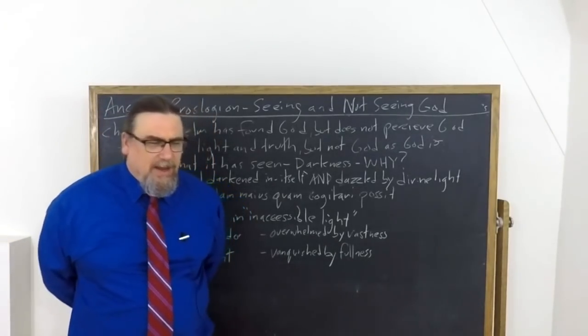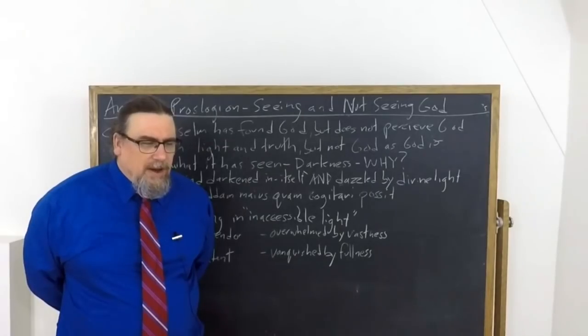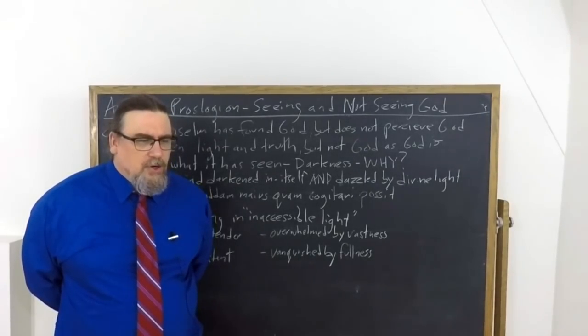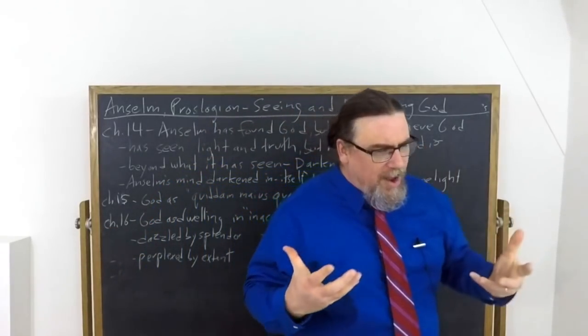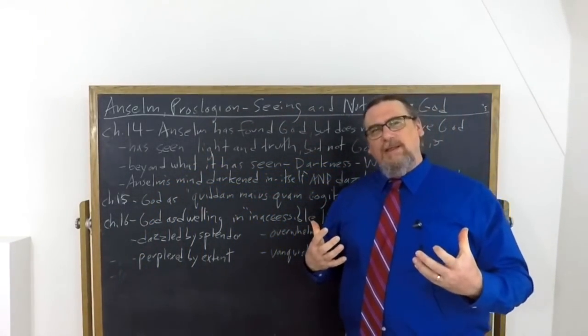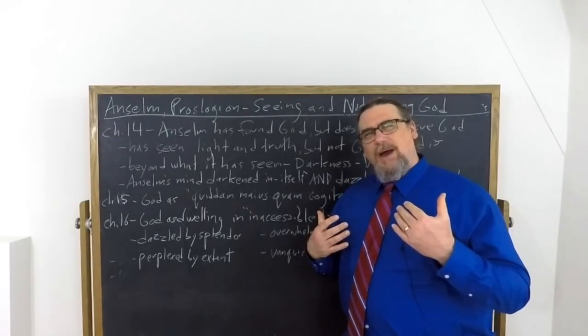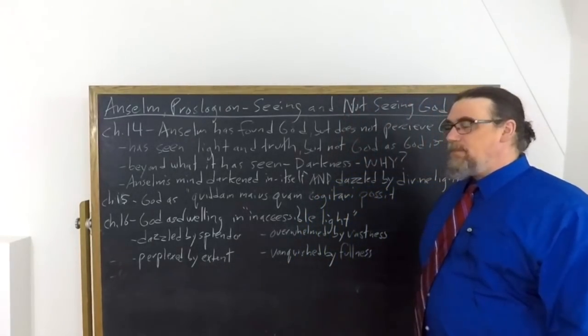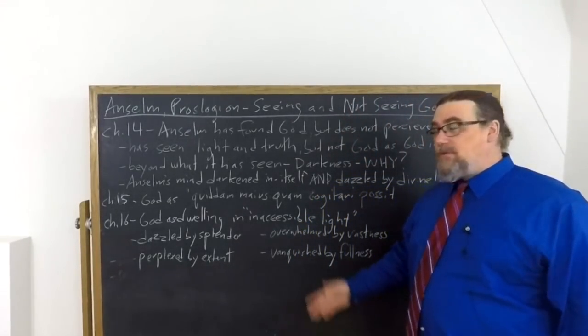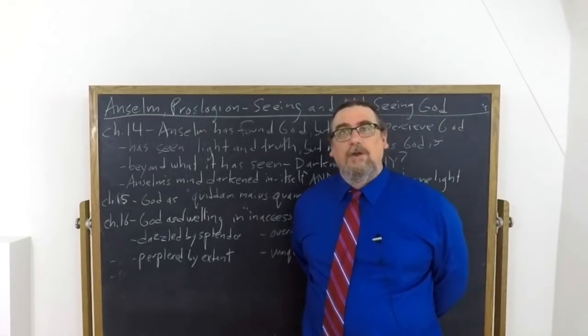So it's not simply visual, it's also quantitative in a certain sense, or perhaps we could talk about degrees of being. It is pinched by its own narrowness and vanquished by your fullness. So he says, how great is that light, for from it flashes every truth that enlightens the rational mind. And this is as much as we get of the sort of illumination theory that Augustinians in the Middle Ages made so much of. Anselm does think that God is the light that illuminates every single rational mind, not only our own mind but every other one.